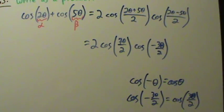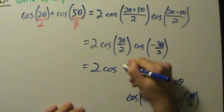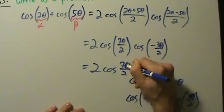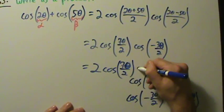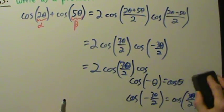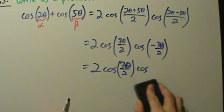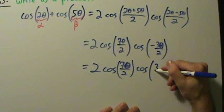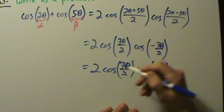So let's zoom back out. The final answer is two times the cosine of seven theta over two, times the cosine of three theta over two. And that's it.